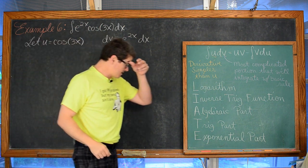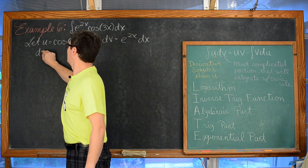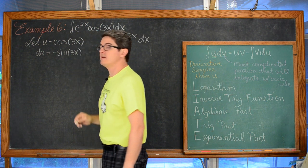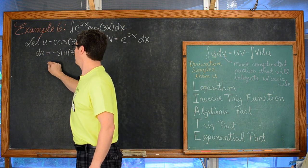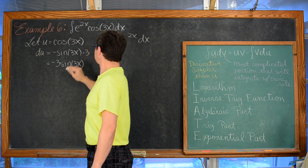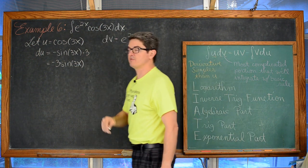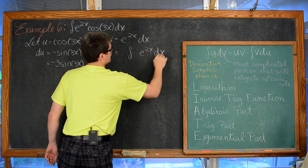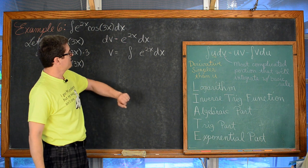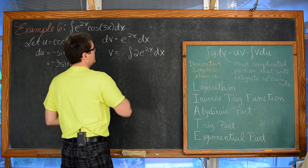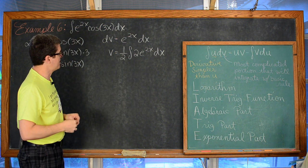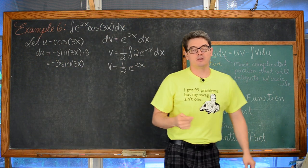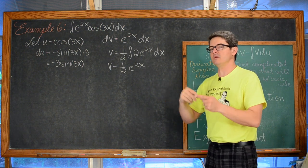Taking the derivative of u: du equals negative sine(3x) times 3 dx = negative 3 sine(3x) dx from the chain rule. Integrating dv = e^(2x)dx: the derivative of 2x is 2, so we introduce a factor of 2 and balance with 1/2 out front, giving v equals 1/2 e^(2x).